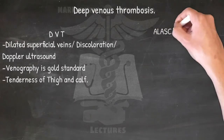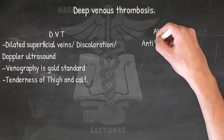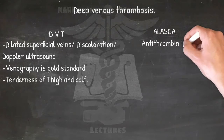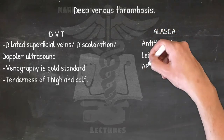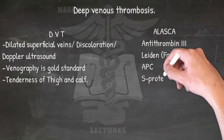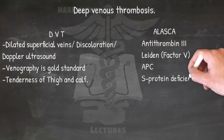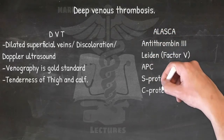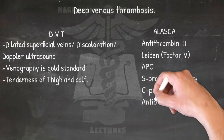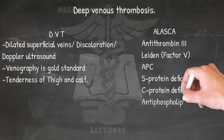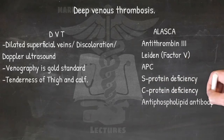The genetic causes of deep venous thrombosis: ALASKA — Antithrombin 3, Leiden factor V, APC (activated protein C), S protein deficiency, C protein deficiency, and Antiphospholipid antibody.